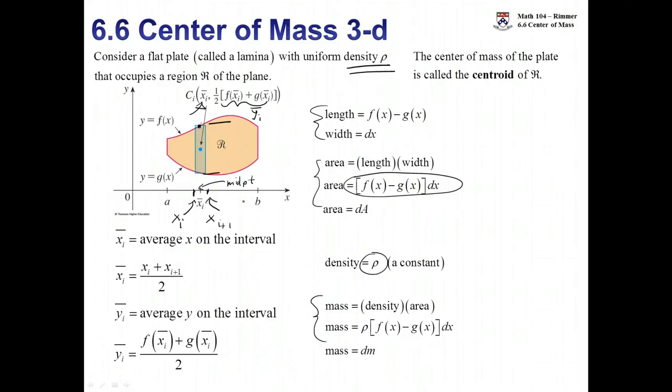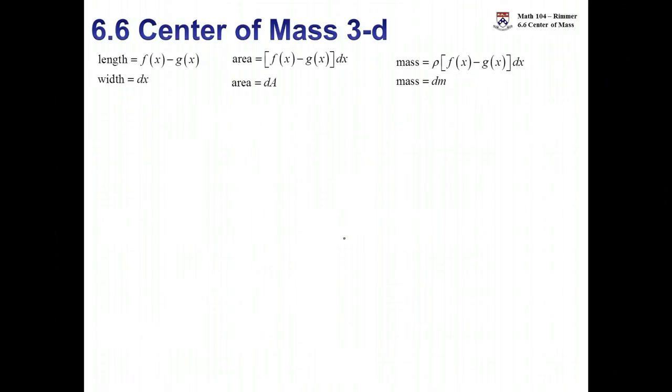As we let the number of rectangles go to infinity, then the mass will be represented by some infinitesimally small piece of mass, dm. So we have dA, we have dm, we have dx, as n goes to infinity, the number of rectangles goes to infinity. Let's get a good understanding of why we have the formulas that we have. It relates back to what we did for the center of mass in 1D and the center of mass in 2D.